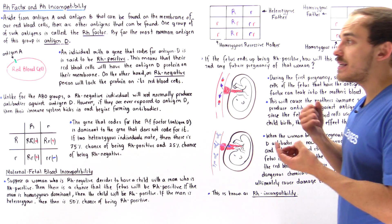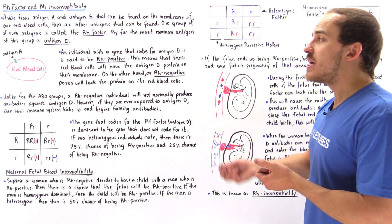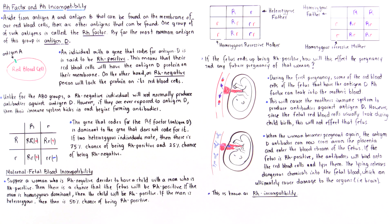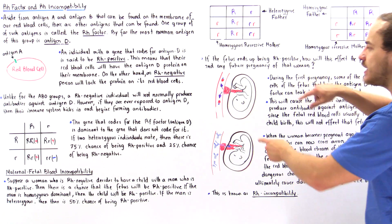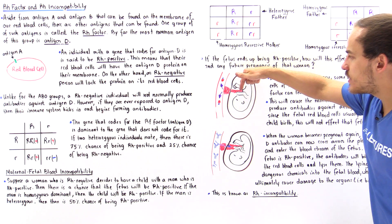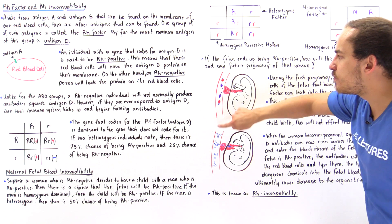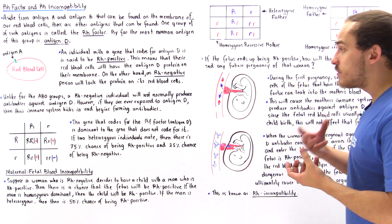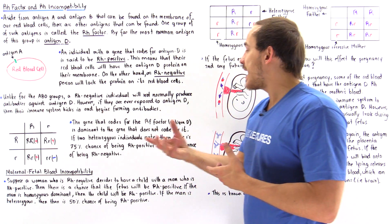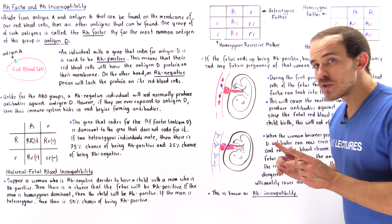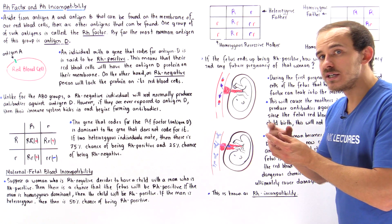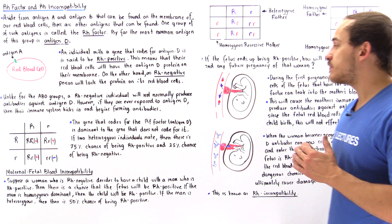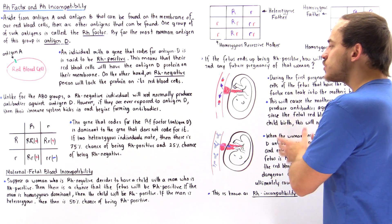That means inside the blood of the fetus, it will have red blood cells that contain antigen D on the membrane. The question is how will this affect that pregnancy and any future pregnancy the woman may have? In this diagram, we have the fetus, the placenta that connects the bloodstream of the fetus to the bloodstream of the mother, and the blood vessel of the mother. Normally, because red blood cells are too large, they cannot pass across the placental membrane. But during childbirth, there is a small likelihood that there can be exchange — a leakage of red blood cells between the fetus and the mother.